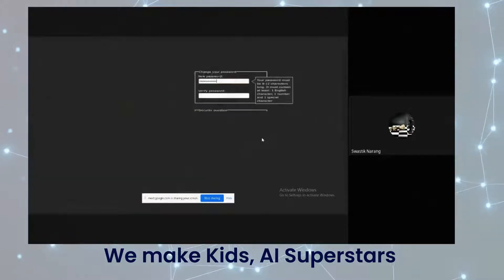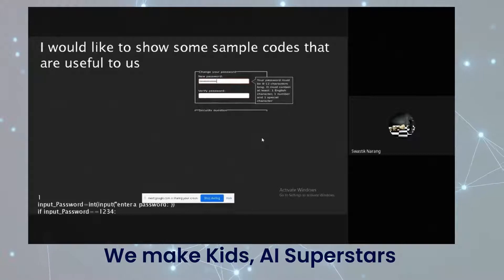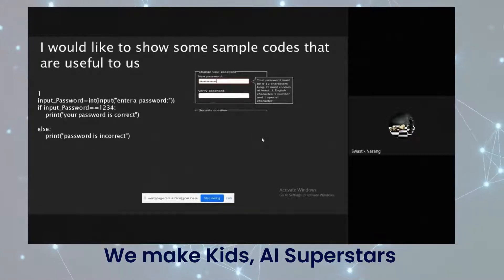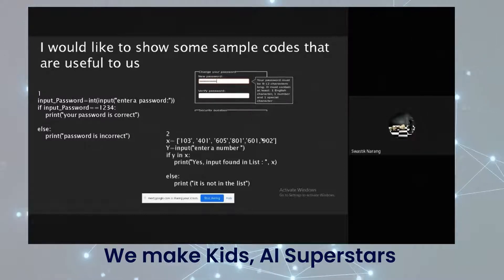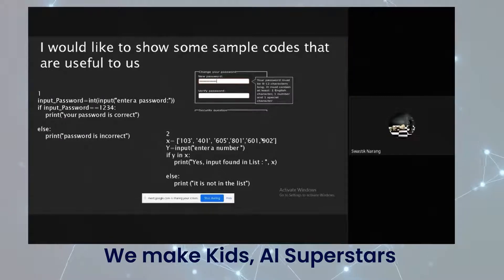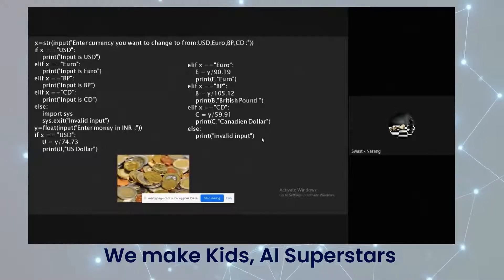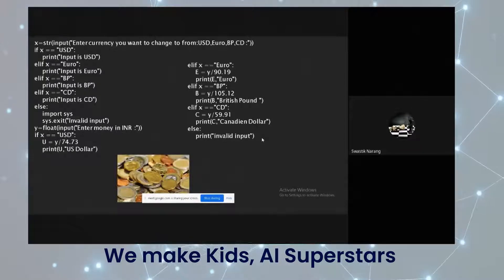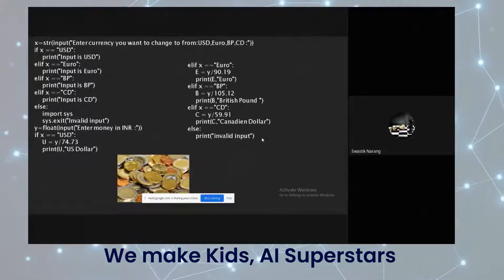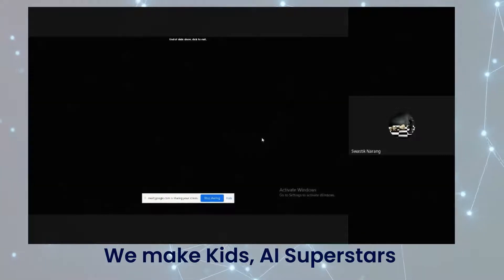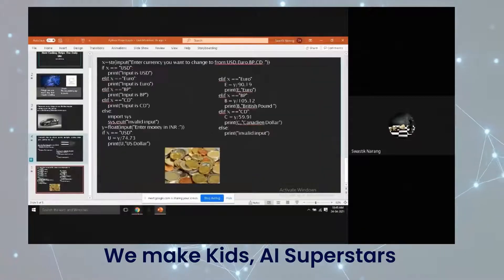I have also prepared some sample code. For my first code, I have made a password checkup. For my second code, I have made a program that can tell us if a certain item is present in a list. And for my last code, I have made a currency changer that can convert Indian rupees to US dollars, Euro, British pound, and Canadian dollars. Now I will show you how my code works.